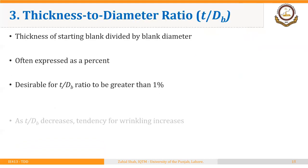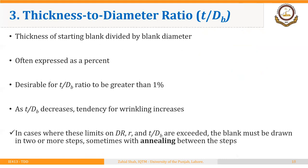Another important parameter is the thickness-to-diameter ratio: the thickness of the starting blank divided by the blank diameter, often expressed as a percentage. It is desirable for the T/D ratio to be greater than 1%. As this ratio decreases, the tendency for wrinkling increases. Whenever the limits on drawing ratio, reduction, and thickness-to-diameter ratio are exceeded, the blank must be drawn in two or more steps, sometimes with annealing between the steps.